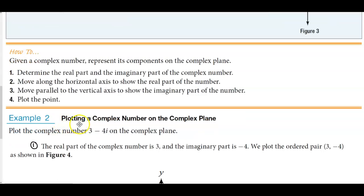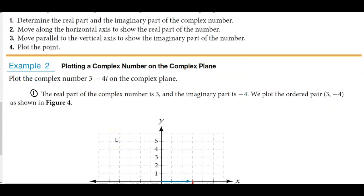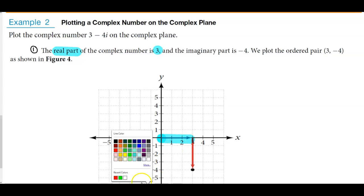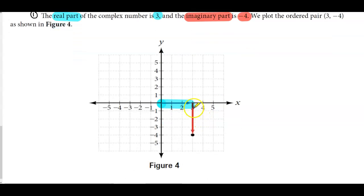For example two, we're plotting a complex number on the complex plane. Plot the complex number 3 minus 4i on the complex plane. The real part is 3, so we start at 0 and move to the right 3 units. The imaginary part is negative 4, so we move down 4 units.